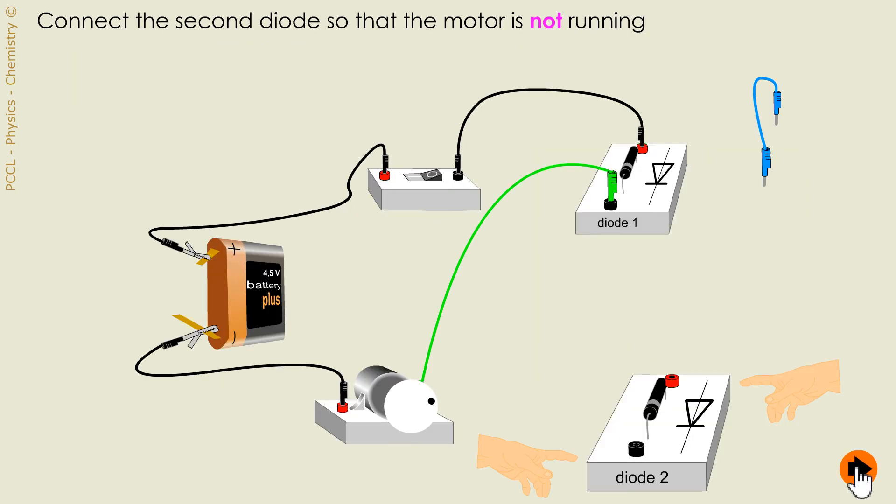Finally, I offer you an application exercise here. Place the second diode so that the motor stops running. So we will start by activating the switch to open the circuit. That is still true. Whenever you have to modify a circuit, you prevent the current from flowing. It is a precautionary principle.